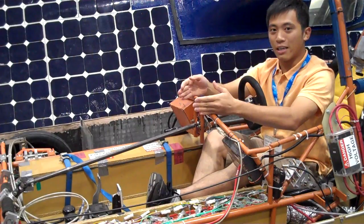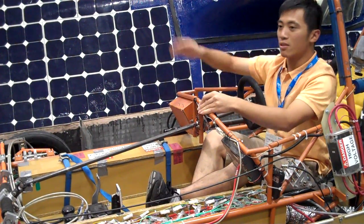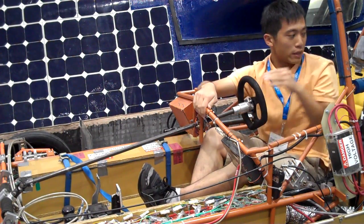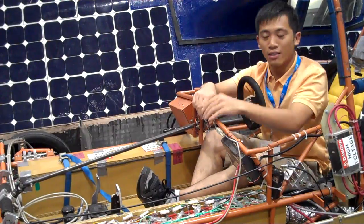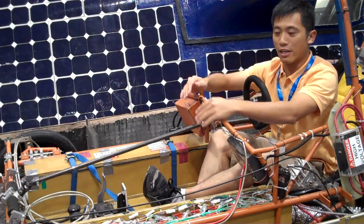Basically a solar car takes sunlight and converts it to electricity, which will go either to our motor in the back, these batteries right here, or just around the electronics here.